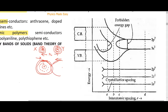When overlapping is complete, it becomes very difficult to determine to which atom a given electron belongs. Due to this kind of overlapping, the valence band and conduction band are formed. The valence band is the band in which electrons are still held by the nuclei, while in the conduction band electrons are free to move.